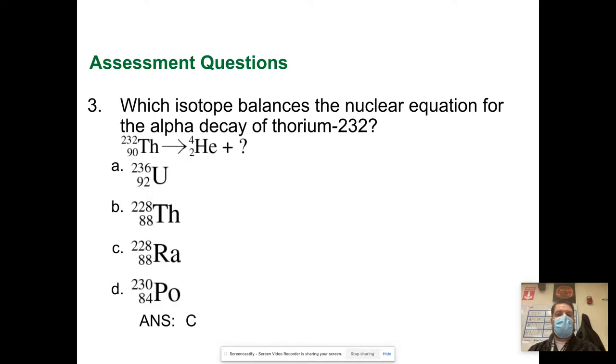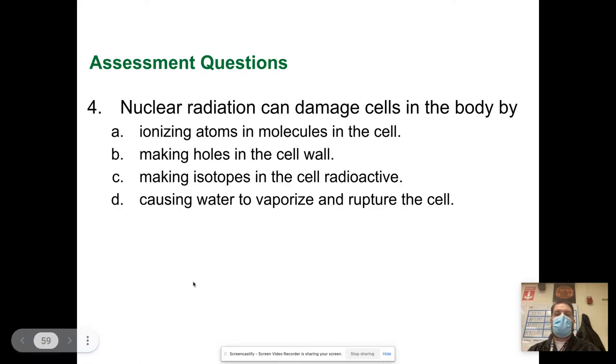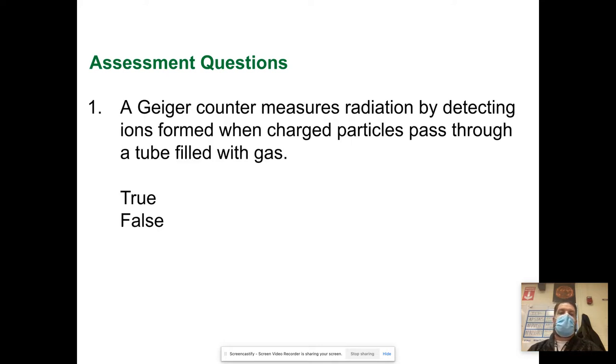The last one is which isotope balances the nuclear equation, the alpha decay of thorium-232. Alpha means that you're going to decrease by two protons and two neutrons. So that means that this number here will decrease by two and this number will decrease by four, right. So that would be C. Nuclear radiation can damage cells in the body by ionizing atoms in the molecules of the cell. A Geiger counter measures radiation by detecting ions formed when charged particles pass through a gas tube. That's true, and that is it.